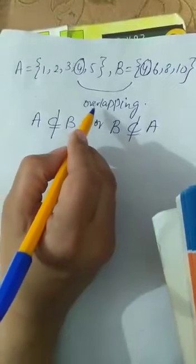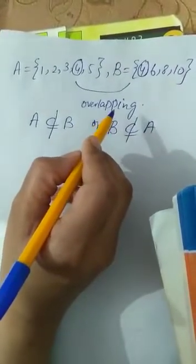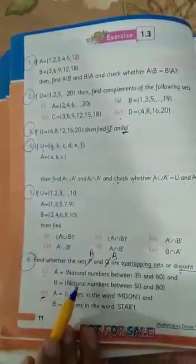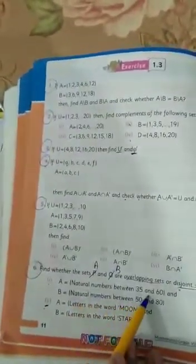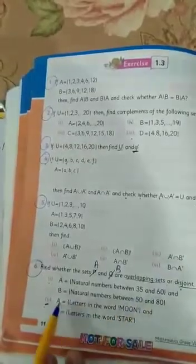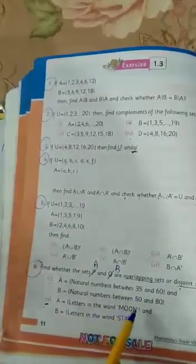Now in this question, first part, A is equal to natural numbers between 35 and 60 and B is equal to natural numbers between 50 and 80. Now how we will do this question?